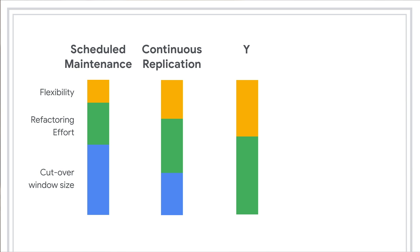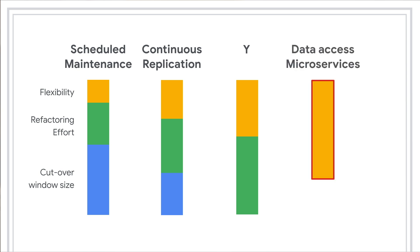In a microservice architecture, this recipe is the preferred method and gives you maximum flexibility, because you can refactor this data access component without impacting other components of the architecture and without requiring a cutover window. It does put a burden on the developer side, but is significantly less than the why approach we discussed.